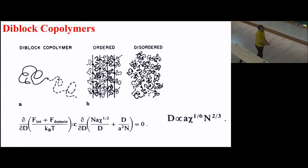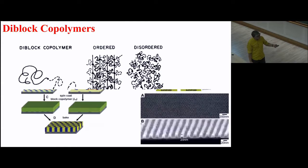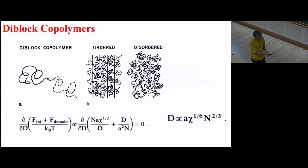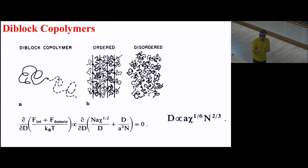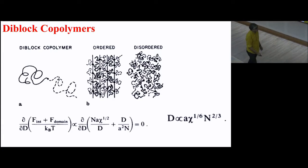Once you understand surfactants, doing di-block copolymers is really straightforward. Di-blocks are where you don't have a small head group — you have a long head group and a long tail group. The only modification to this theory is that both branches have conformational fluctuations. So you take the old theory, add conformational fluctuations for each branch — the cost of squeezing each one of those things — put that term in, and then you can start to predict what these systems will do.